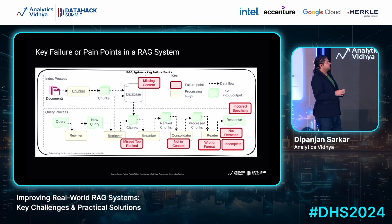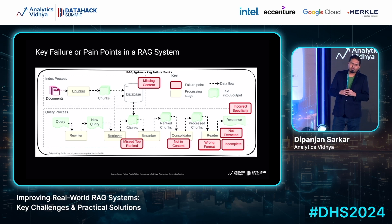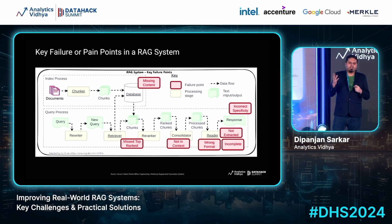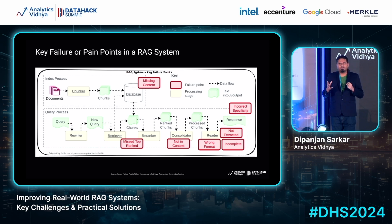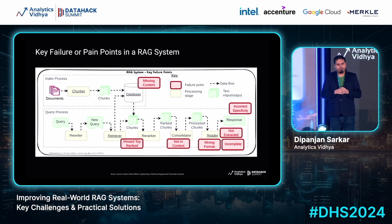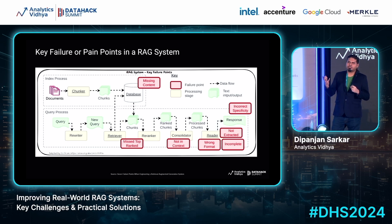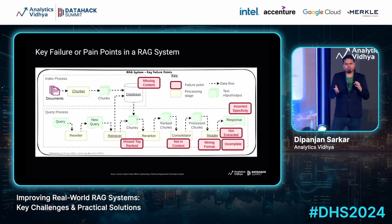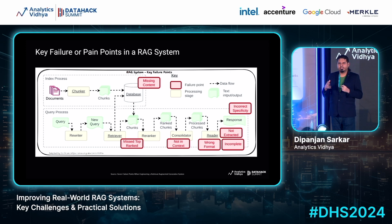The red boxes are basically the failure or challenge points in a RAG system. Of course there can be more, but these are the most popular ones. You have missing content, which means you don't have content in the database to answer your question. You have challenges when your retrieval system is not working properly, which could include missed top rank, not in context, incorrect specificity, and not extracted. And there are sometimes challenges with response generation when you retrieve the right context documents but the LLM is not able to generate the correct response — including the wrong format challenge and incomplete responses.